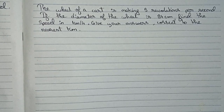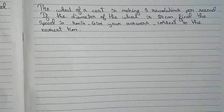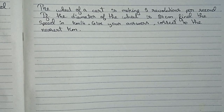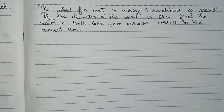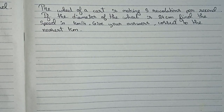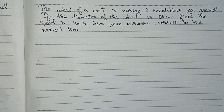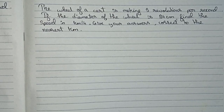Hello guys, welcome to this video. In this video our question is: the wheel of a cart is making 5 revolutions per second. If the diameter of the wheel is 84 centimeters, find the speed in kilometers per hour, giving your answer correct to the nearest kilometer.